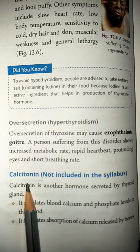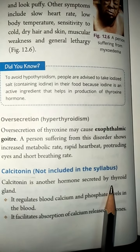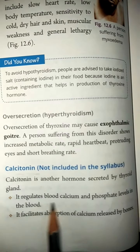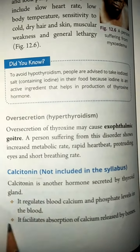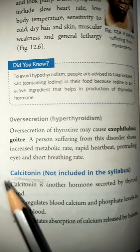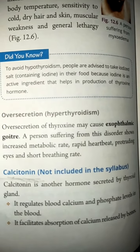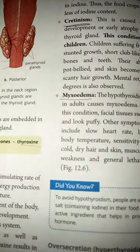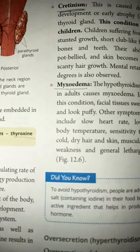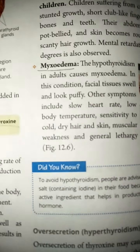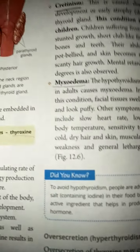The second hormone of the thyroid gland is calcitonin. There are two functions of this hormone: first, it regulates blood calcium and phosphate levels in the blood — as the name suggests, calcitonin relates to calcium. In the next video, we will talk about adrenal glands. Please like and subscribe to my channel. Take care, bye.